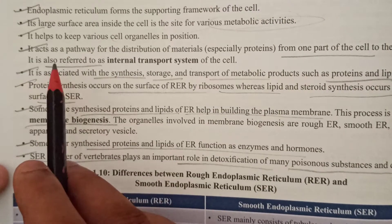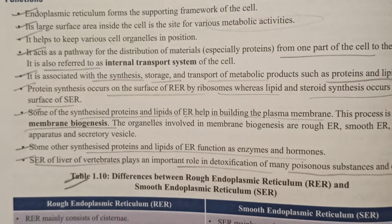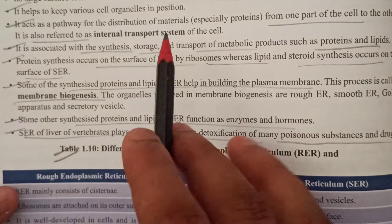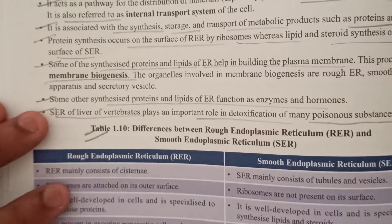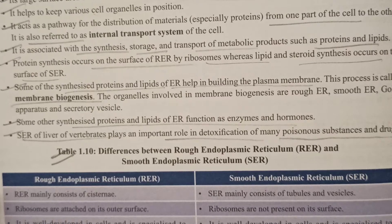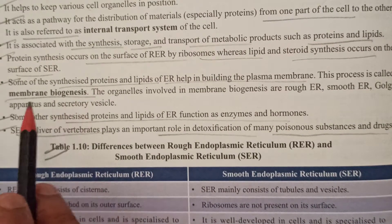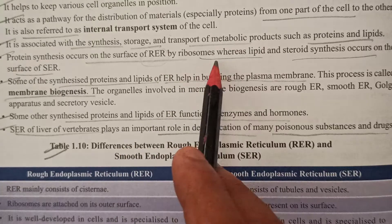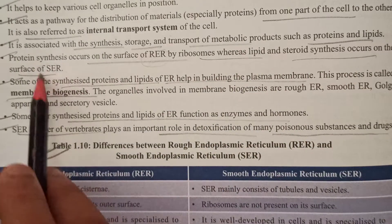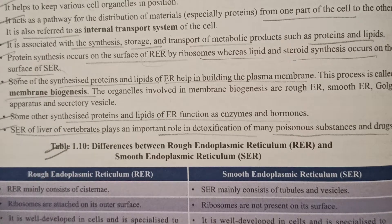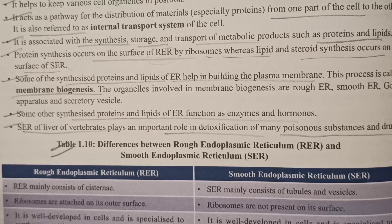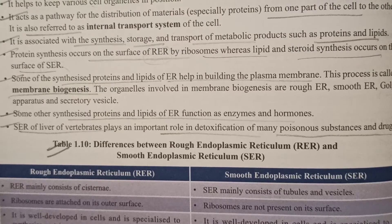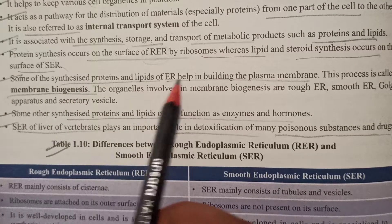It helps keep various cell organelles in position and acts as a path for distribution of material from one part to the other - an internal transport system within the cell, transporting proteins, fats, and other materials. Protein synthesis occurs on the surface of rough endoplasmic reticulum by ribosomes, while lipids and steroids are synthesized by the smooth endoplasmic reticulum. It also helps in membrane biogenesis - the synthesis of proteins and lipids for the plasma membrane.